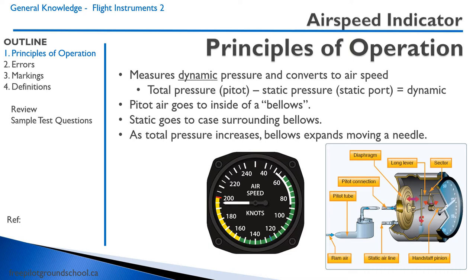The total pressure from the pitot tube, subtracting the static pressure from the static port, provides dynamic pressure. The pitot air goes to the inside of a bellows. Looking at the diagram on the right, here is the pitot tube — the air travels in here along the tube and inside of this bellows. The static air, by contrast, goes and fills the inside of the airspeed indicator. As the total pressure from the pitot tube increases, this bellows gets bigger, and via a gear system, the indicated airspeed increases.